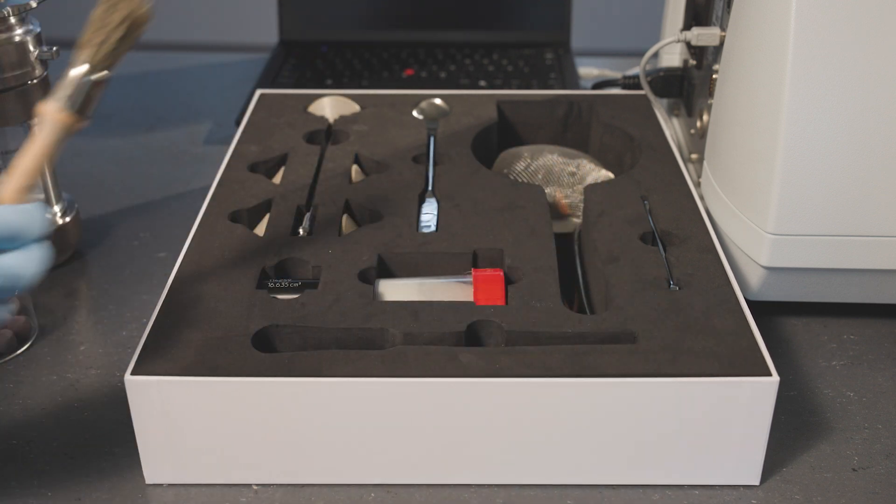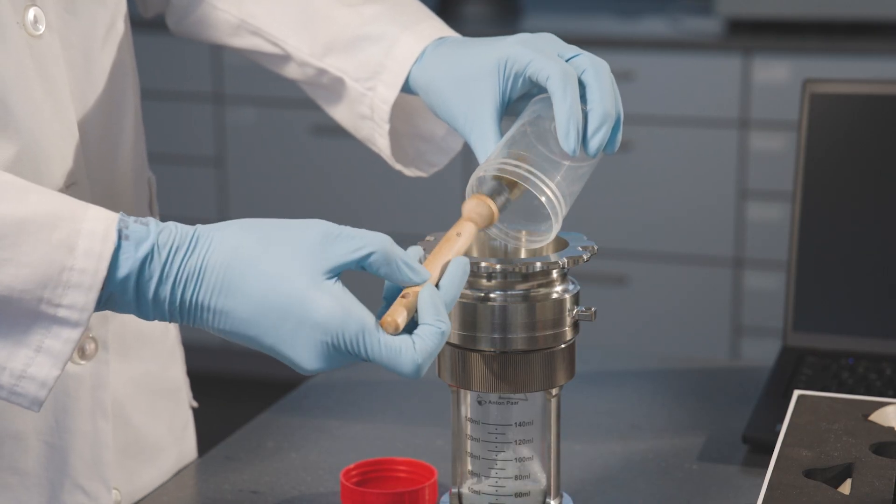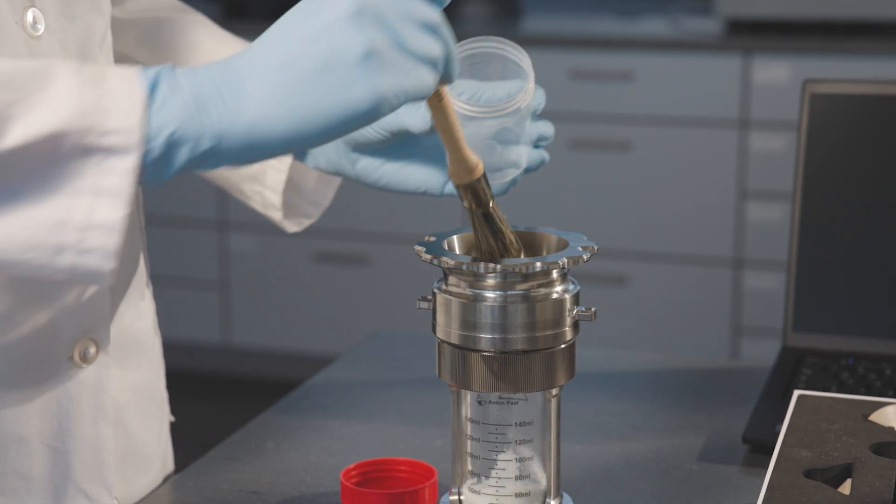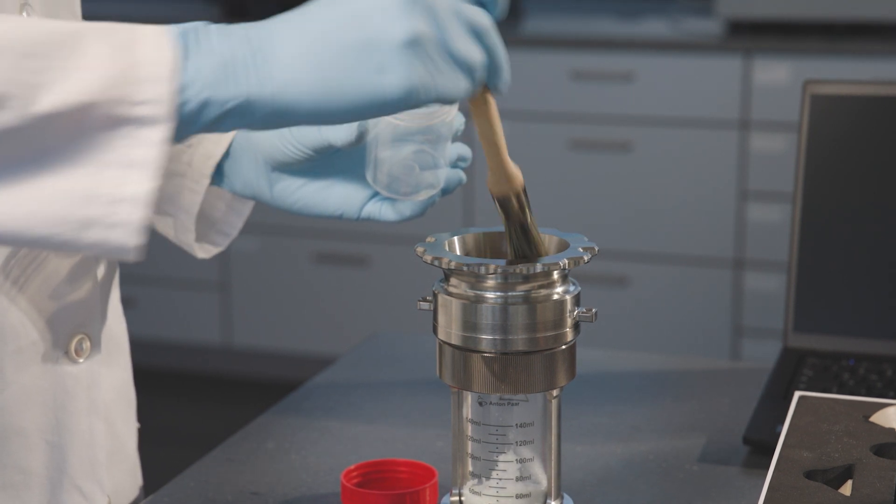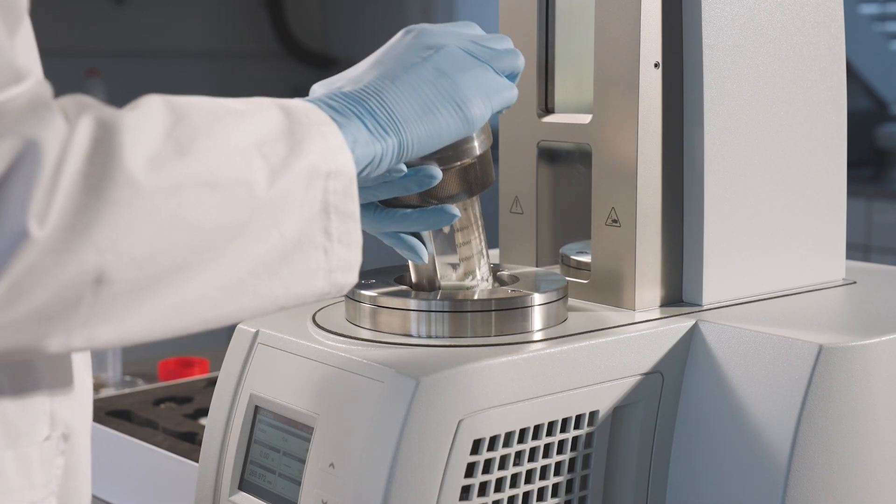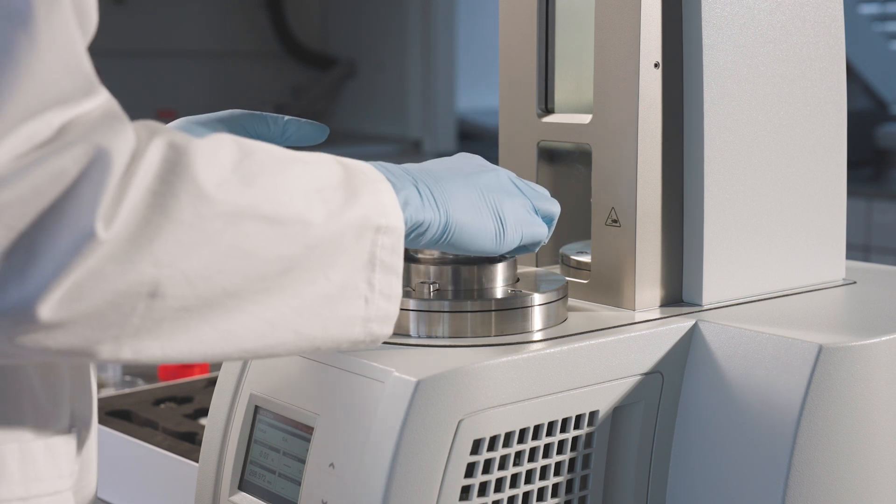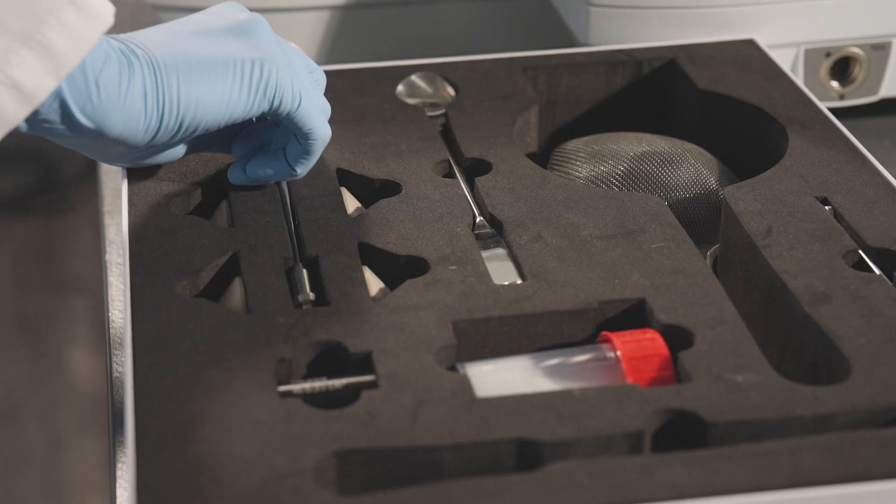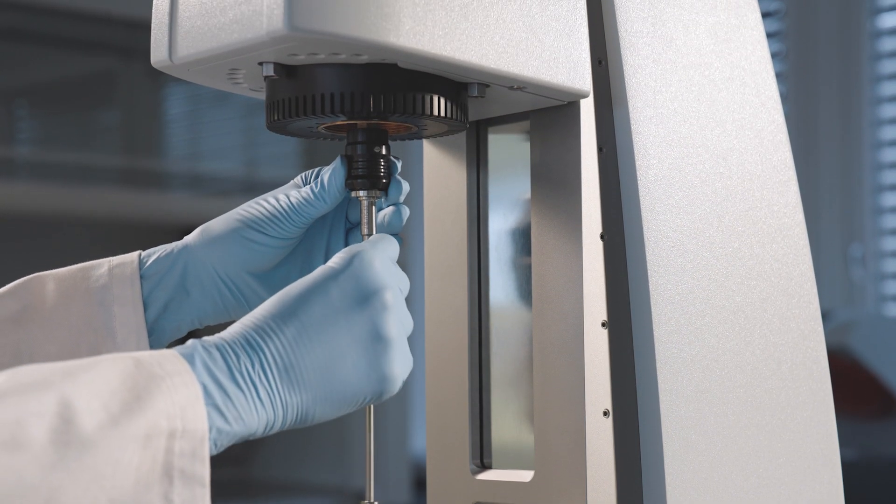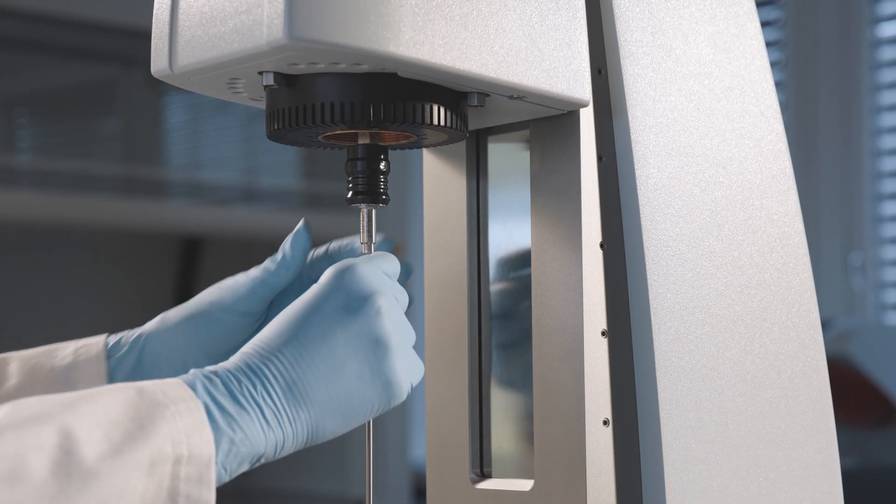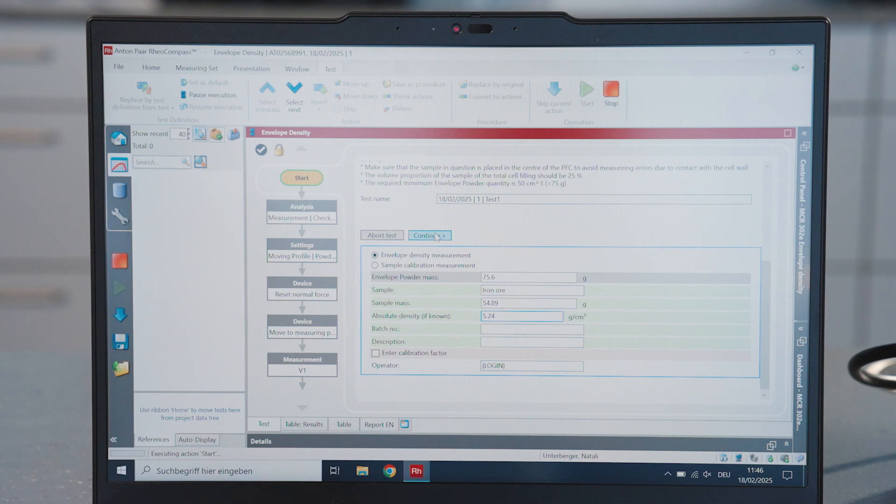Use the provided brush to prevent powder loss. Install the powder flow cell in the measuring cell holder. Mount the measuring system. Start the measurement with Continue.